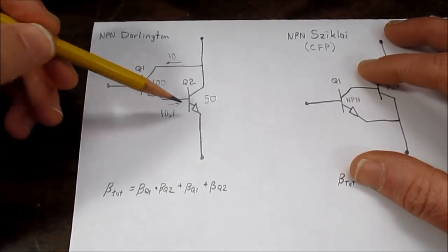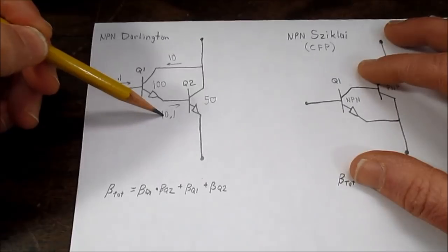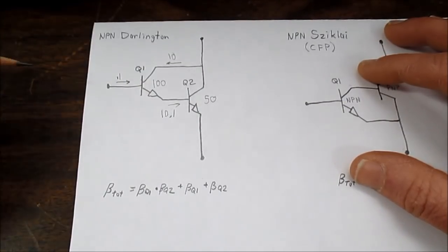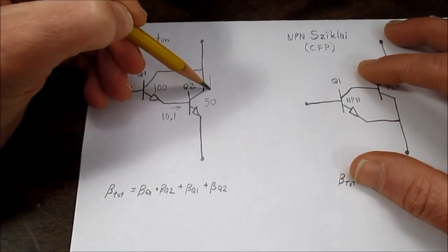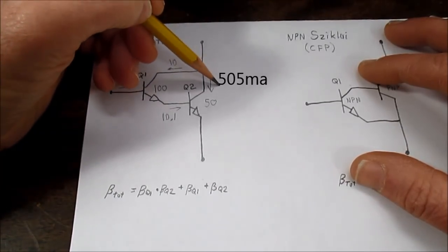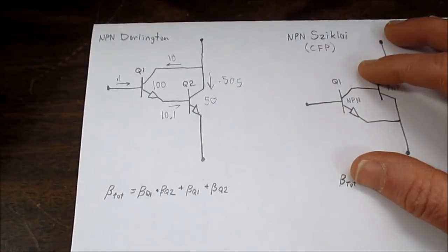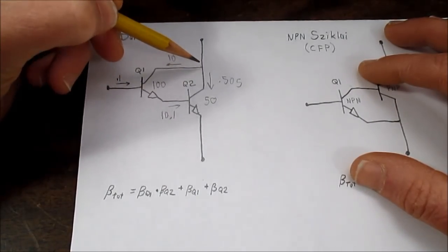And again, to find the collector current, we just multiply this by our beta of 50. So in this branch of the circuit we have 505 milliamps. But the currents converge at this point.